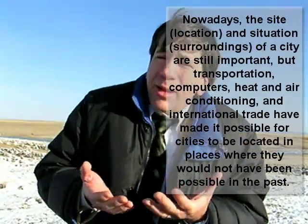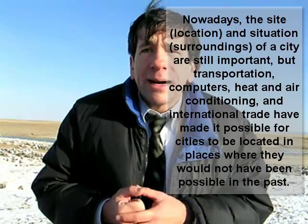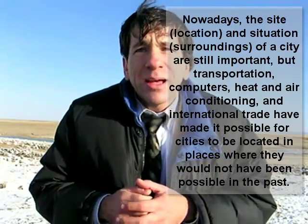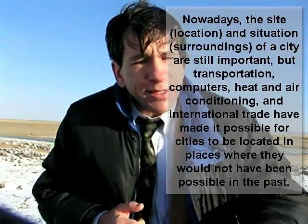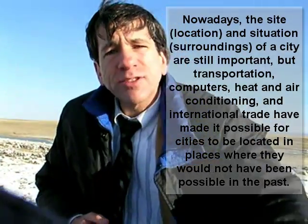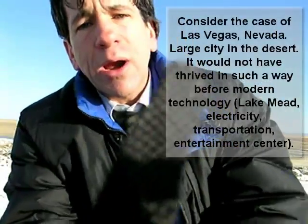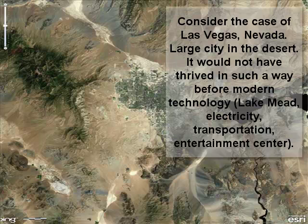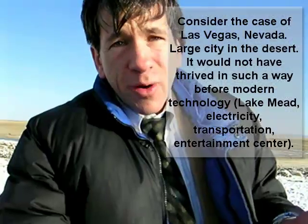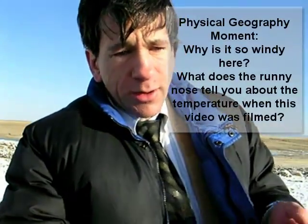Nowadays you still have a surrounding area that can support a city, but there's also food coming in from all over. This is why we have cities like Las Vegas — an urban area in the middle of a place where, 150 years ago, they couldn't have supported that kind of population, because Las Vegas is essentially a desert with very little local food production.